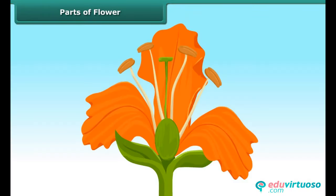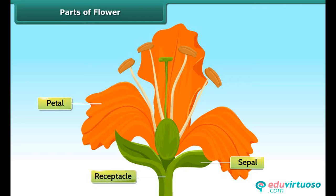Other important parts of the flower are the petals and sepals. Petals are the colored parts of a flower. The sepals are the green petal-like parts at the base of the flower. The receptacle is the part of the flower stalk where the parts of the flower are attached.